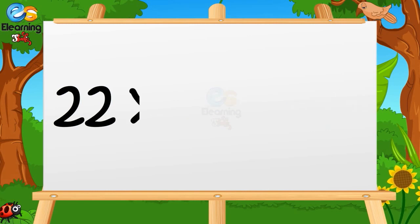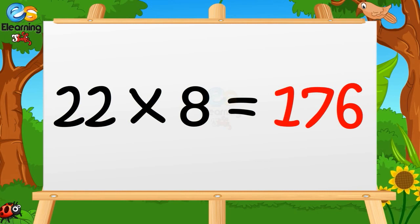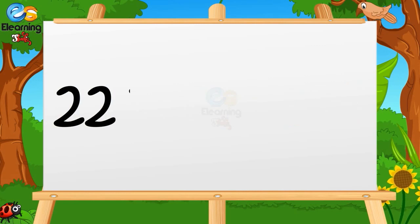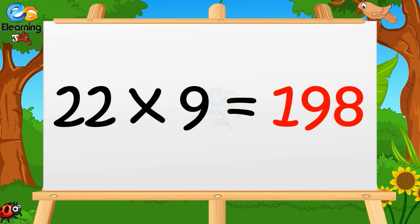22 × 8 is 176. 22 × 8 is 176. 22 × 9 is 198. 22 × 9 is 198.